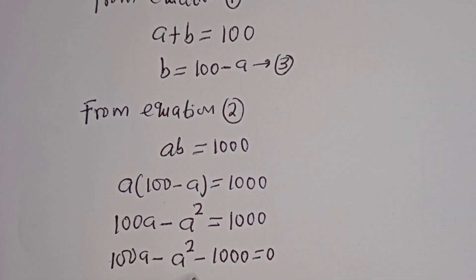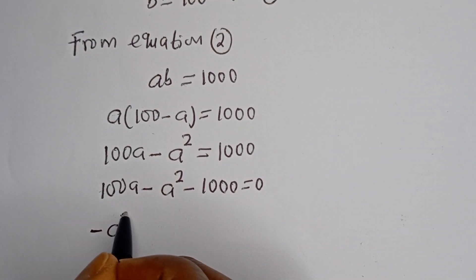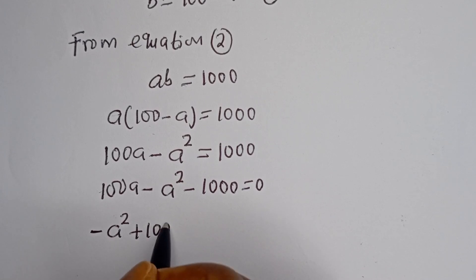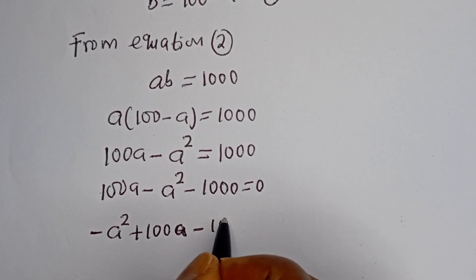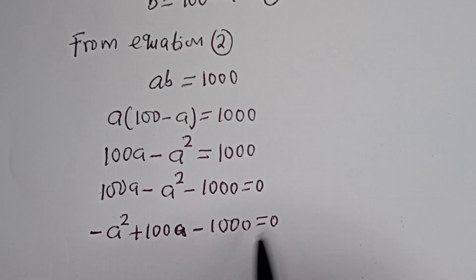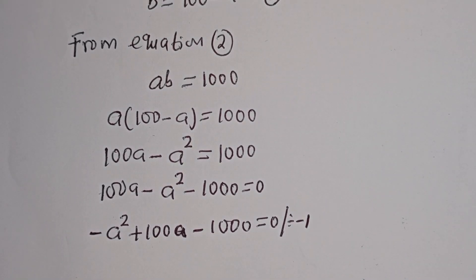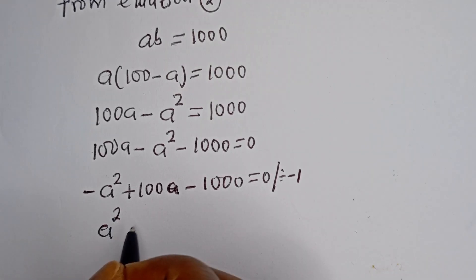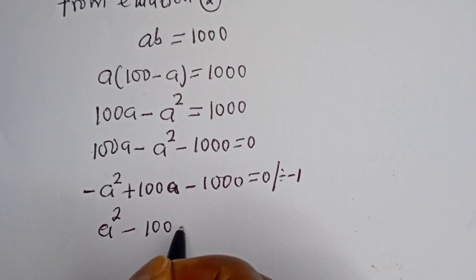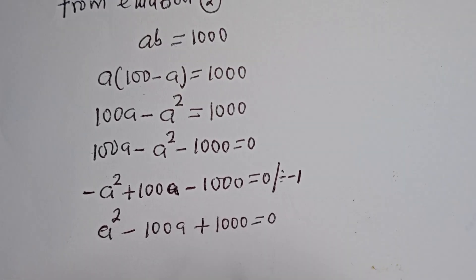Now let's put this in standard form. We have minus A squared plus 100A minus 1000 equals 0. This is a quadratic equation. Let's solve this equation.